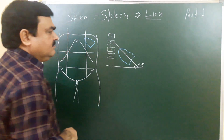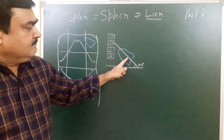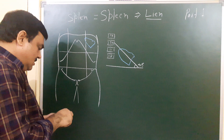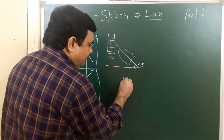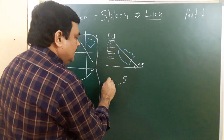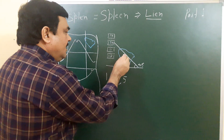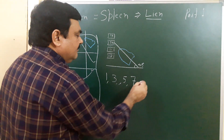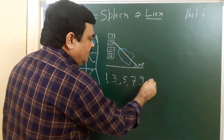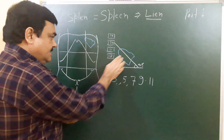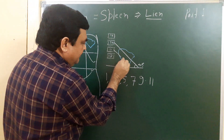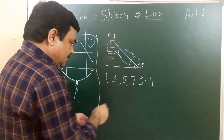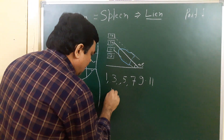The long axis of the spleen makes an angle of about 45 degrees with the horizontal. Its length is 5 inches, its thickness is 1 inch, its width is 3 inches, and its weight is 7 and a half ounces. It is related with the 9th to 11th ribs. All these numbers are known as Harris dictum.